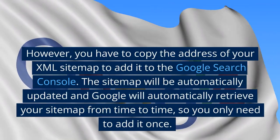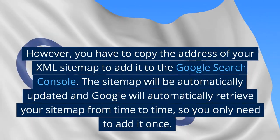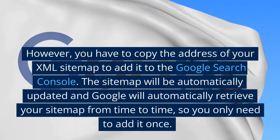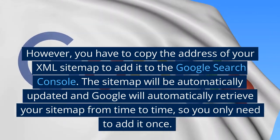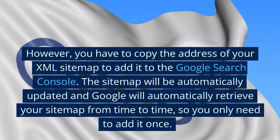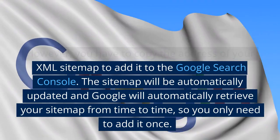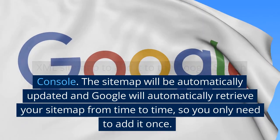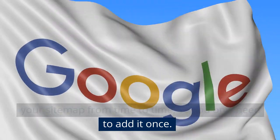However, you have to copy the address of your XML sitemap to add it to the Google Search Console. The sitemap will be automatically updated and Google will automatically retrieve your sitemap from time to time, so you only need to add it once.